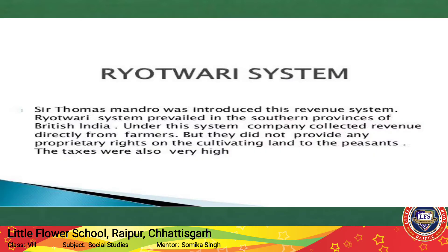The second one is the Ryotwari System. Sir Thomas Munro introduced this revenue system, which prevailed in the southern provinces of British India. Under this system, the company collected revenue directly from the farmers but did not provide any proprietary rights on the cultivation land to the peasants. The taxes were also very high.